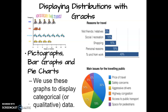For the next several days we're going to be looking at categorical data, or qualitative data, and looking at different ways that we would graph this particular type of data — displaying distributions with graphs. We'll be doing a lot of Khan Academy for this section.